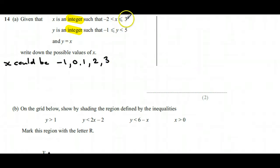y can be negative 1 as well because it's greater than or equal to negative 1, and then goes up to 4, but it doesn't include 5 because y has to be less than 5.